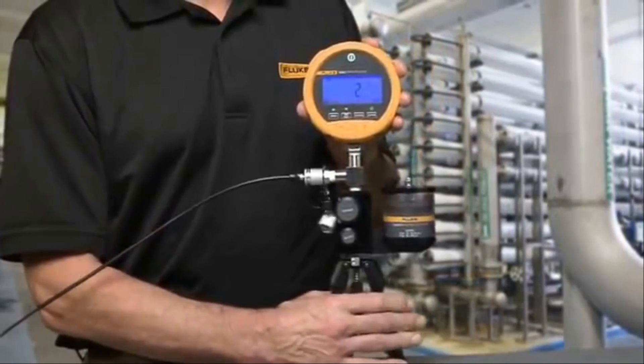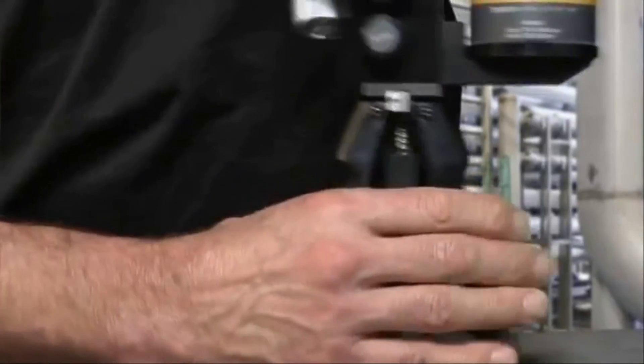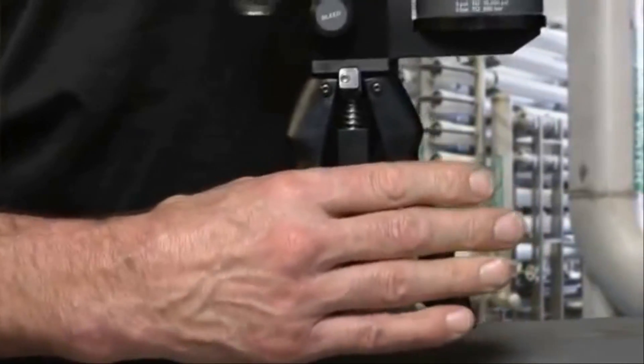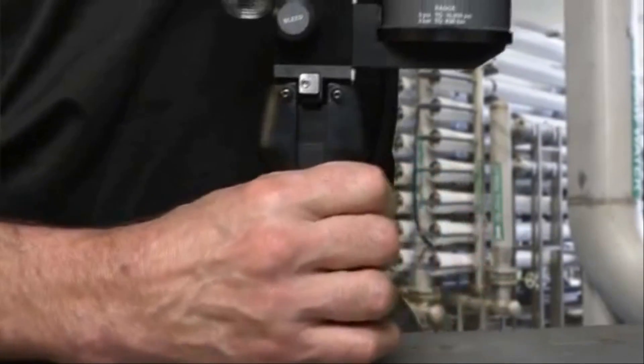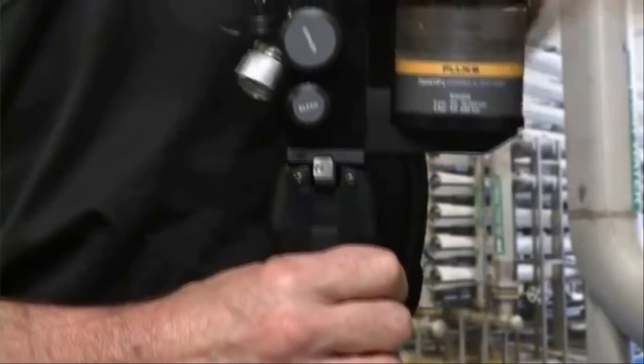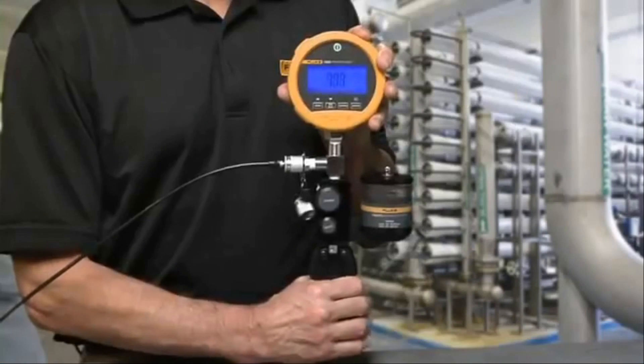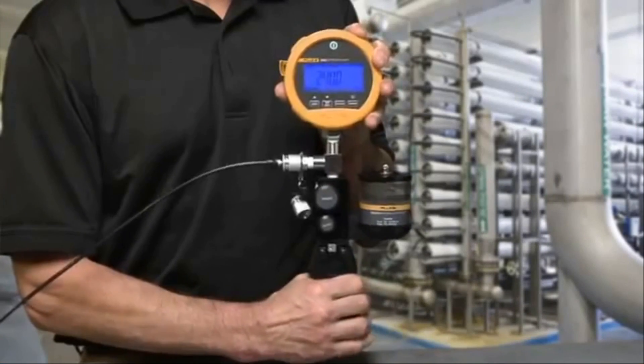With both handles released, squeeze the pump handles until pressure begins to increase. Then squeeze the handles closed, press the handle limiting button, and continue pumping until you get close to the desired pressure.